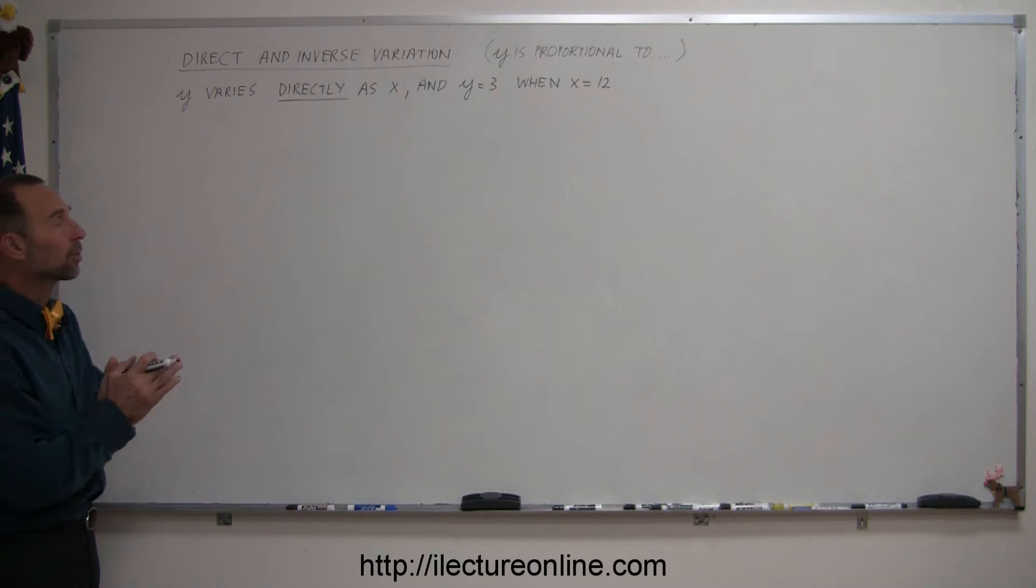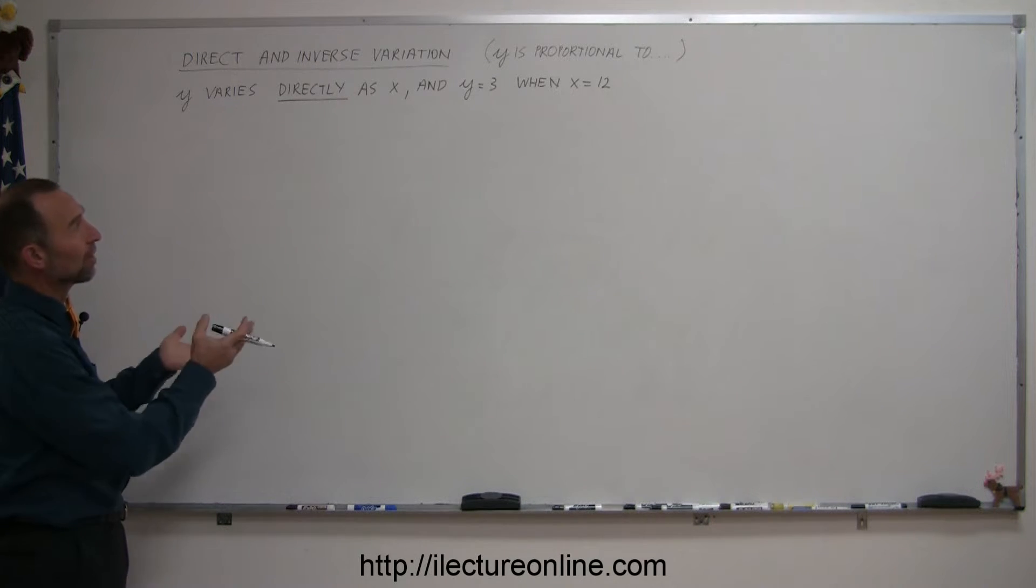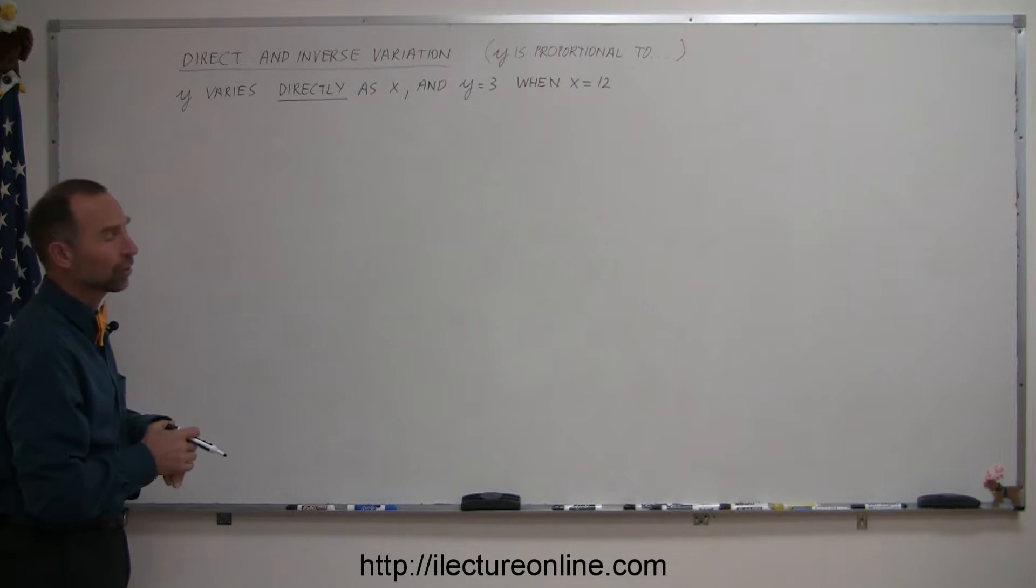And to illustrate what we're talking about here, we have a little example. Here it says y varies directly as x, or you can also say y is directly proportional to x, another way of explaining that. And then they give information such as when y is equal to 3, x is equal to 12.